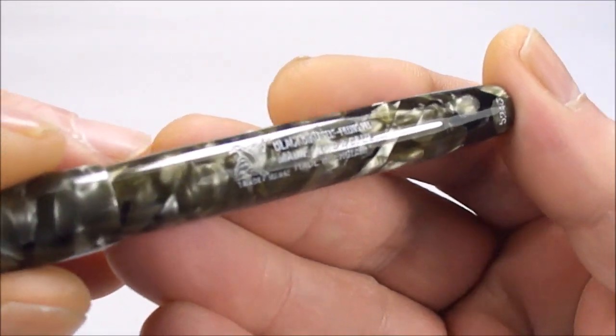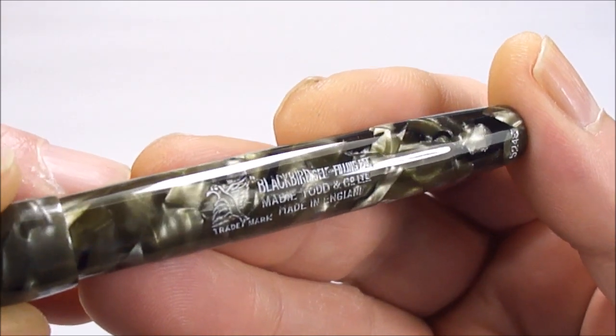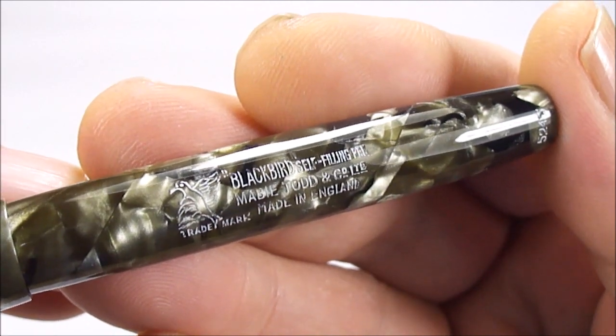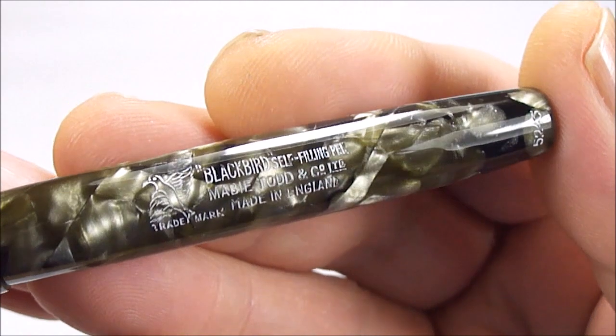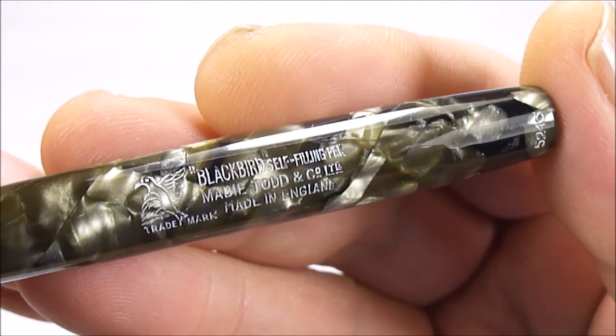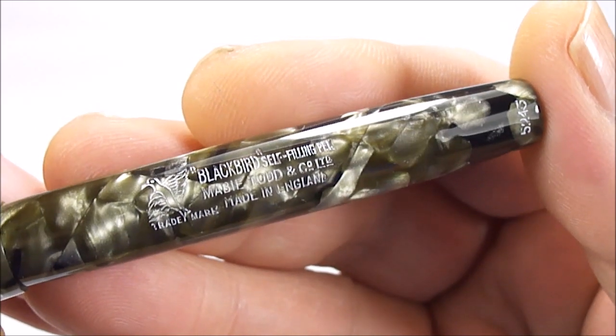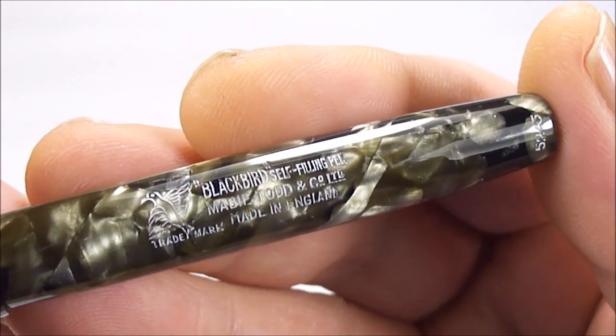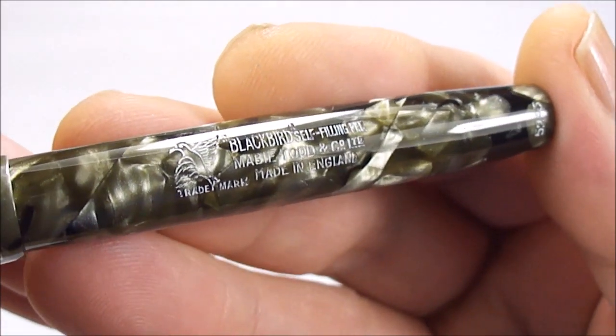Now, let's show you the barrel imprint. What I've actually done, because of the color of the marbling, I've actually highlighted for you. Now, again, you'll notice to the left, it's got this blackbird, and then it has Blackbird, Self Filler, Mabie Todd and Company, made in England. So, as you can see, a lovely clear imprint that we've highlighted for you.